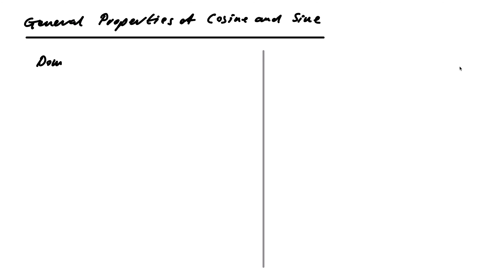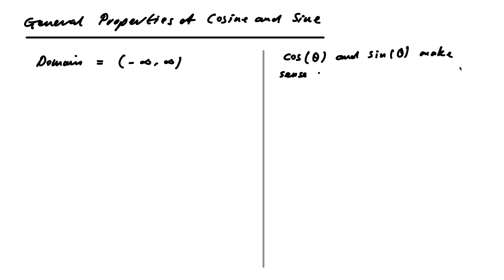The domain of both sine and cosine is all real numbers. That's because of the definitions of cosine and sine — they make sense for every theta in minus infinity to infinity. Theta is thought of as a winding angle: you wind around either counterclockwise or clockwise around the unit circle. So it makes sense for any number at all, since you're either winding more than one revolution or going in either direction.